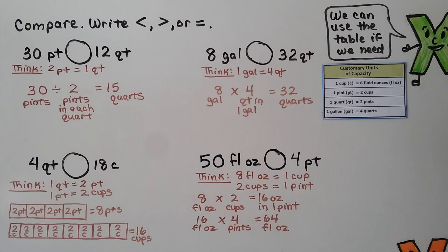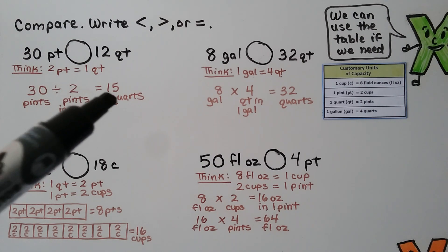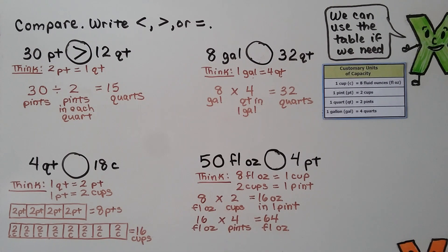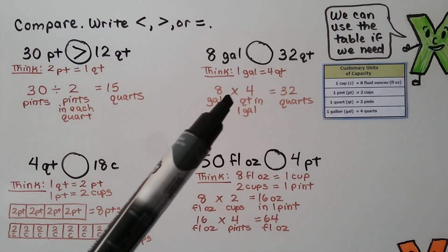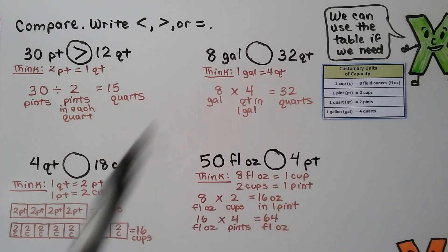We need to compare units and write less than, greater than, or equal to. First: 30 pints compared to 12 quarts. There are two pints in one quart, so 30 divided by 2 equals 15 quarts. Thirty pints equals 15 quarts, which is greater than 12 quarts. Second: 8 gallons compared to 32 quarts. Eight times four equals 32 quarts — these are equal to each other.